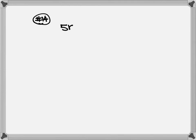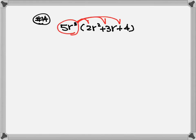Now let's look at number 14. We have 5r to the third power times parenthesis of 2r squared plus 3r plus 4. Again, every time you have a number outside the parenthesis, you need to take that number and multiply it into the parenthesis. So 5 times 2 gives you 10. R times r — write down one r, combine the exponents — 3 plus 2, that's 5.